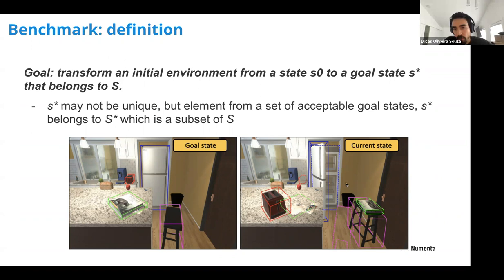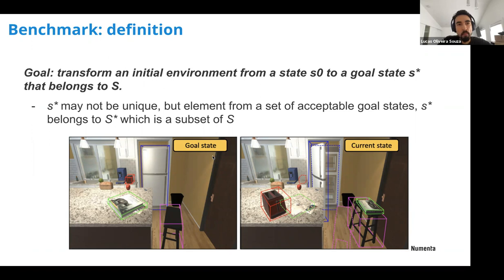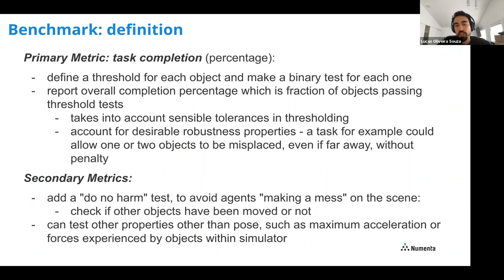Here's an example: the current state is a messy kitchen — the toaster is out of place, books are on the table, and the fridge is open. The goal state is to organize the kitchen: close the fridge, put the book back on the table, and put the toaster back on the counter. The primary metric for this benchmark is task completion, given as a percentage from zero to one. We define a threshold for each object and make a binary test to see if we were able to rearrange that object.